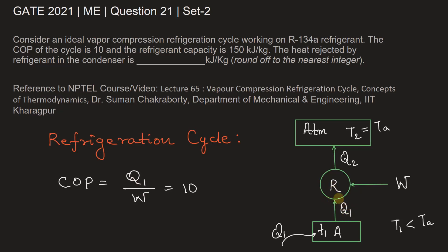Because at any instant, whatever amount of heat is leaking in this body has to be extracted by this refrigerant. So that is the heat capacity of the refrigerant. Q1 is given as 150 kilojoule per kg.